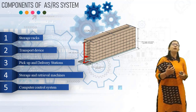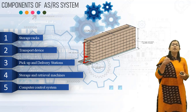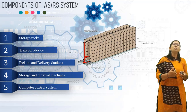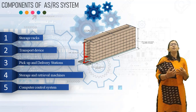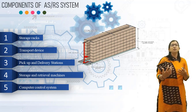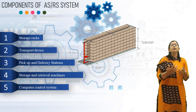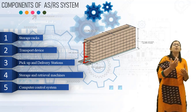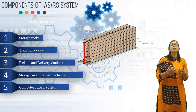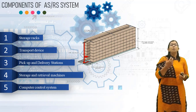The next component is the Pickup and Delivery Station, as shown in the diagram. The input/output stations are called Pickup and Delivery (P&D) stations. Pallets transported by AGVs or conveyors are received at P&D stations. The details of the pallet contents are communicated to the central computer, which then assigns the storage location and storage rack to the pallets.